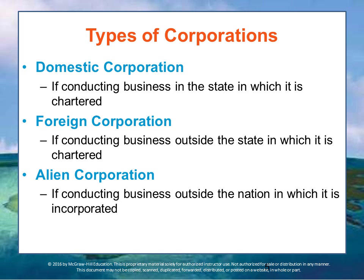There are different types of corporations. A corporation that does business in the state where it is chartered is known as a domestic corporation. If it does business in other US states, it is known as a foreign corporation — even though it's still within the United States. An alien corporation is one whose business is outside of the nation where it is incorporated; in this context, that means operating outside of the United States.